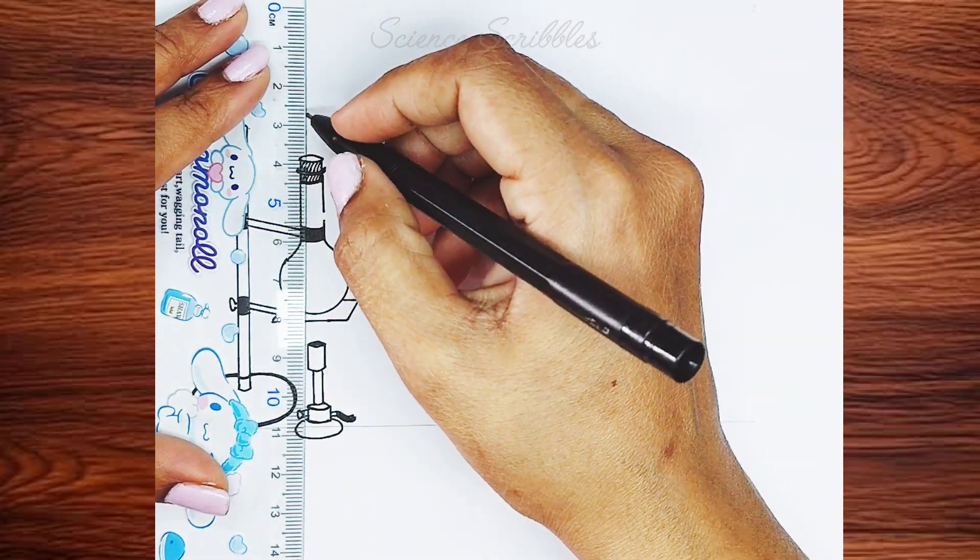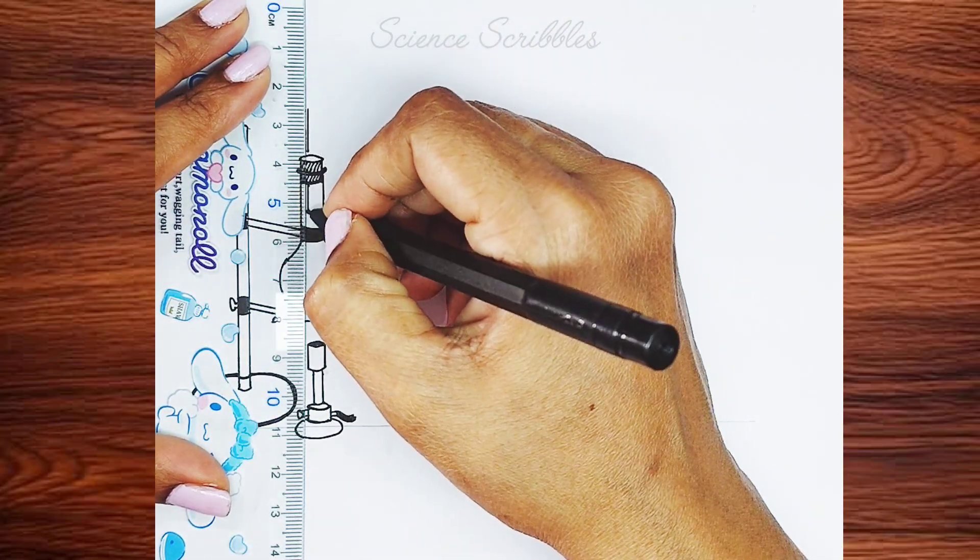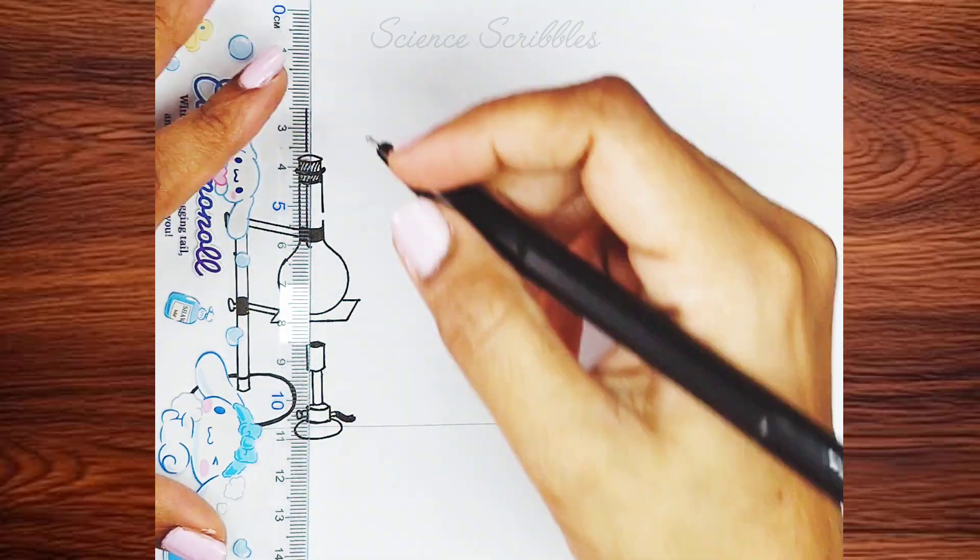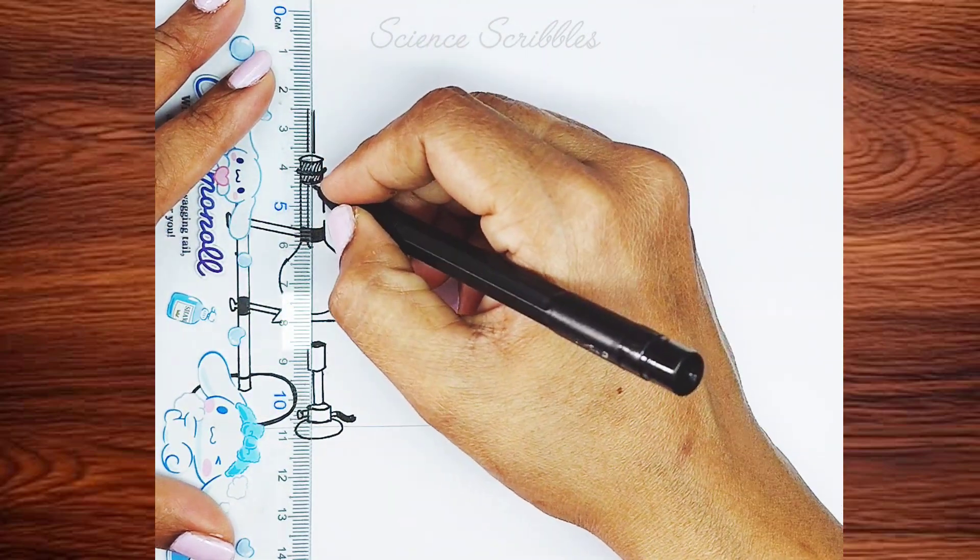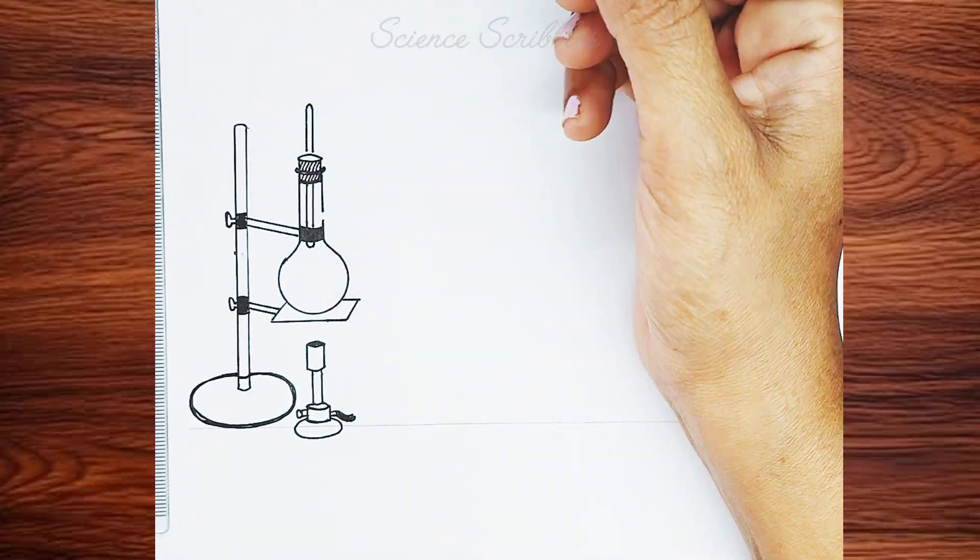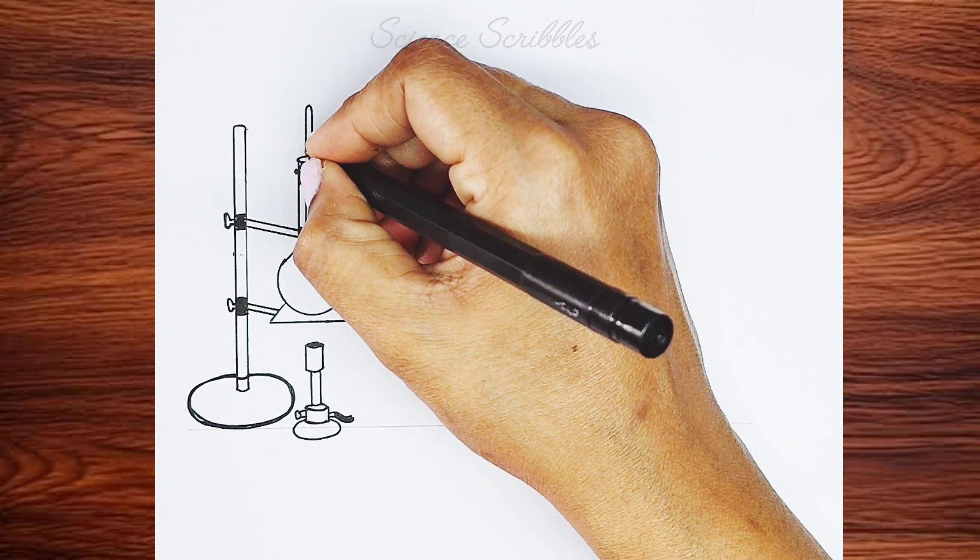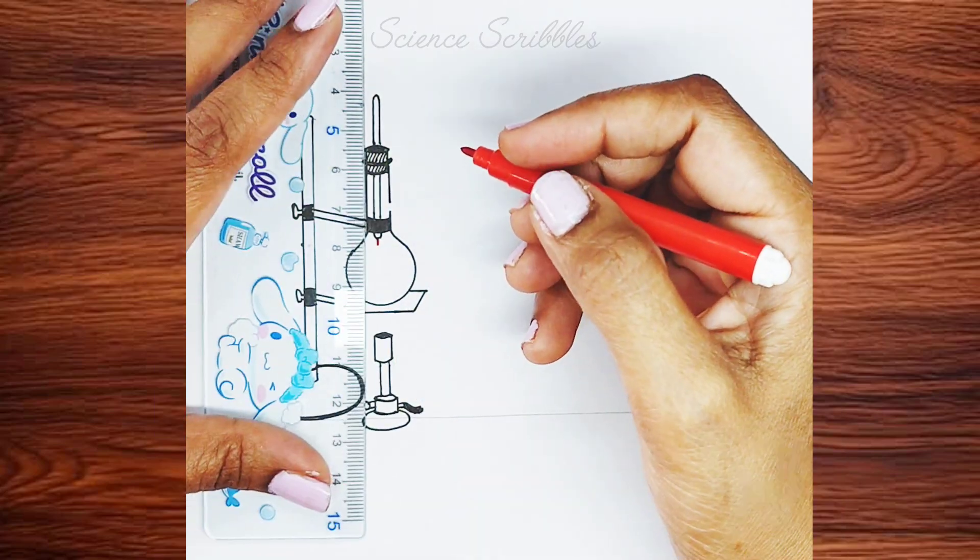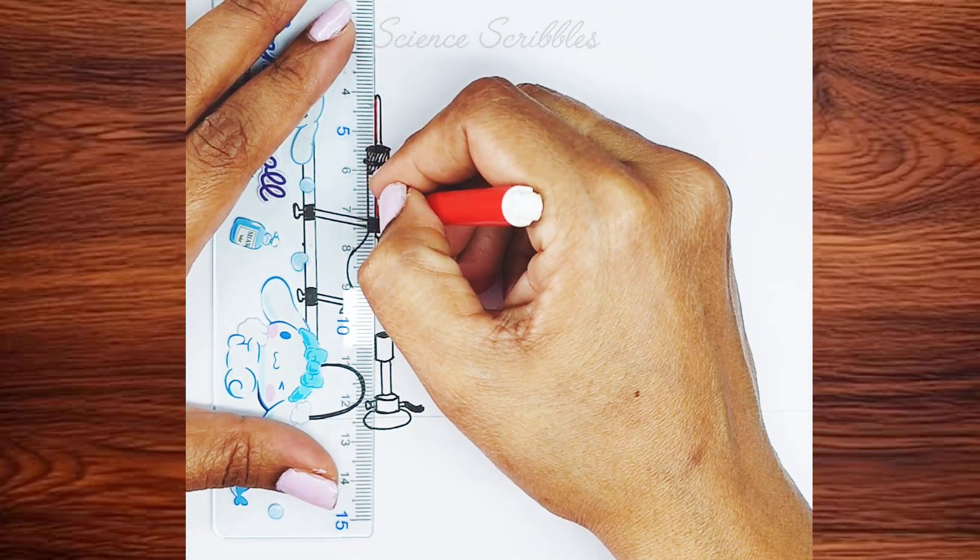Inside the flask, we will insert a thermometer. To do this, draw two vertical lines and close them at the top and bottom with a curved shape, forming the thermometer. I'm using a red sketch pen to draw the tip and the scale inside it.